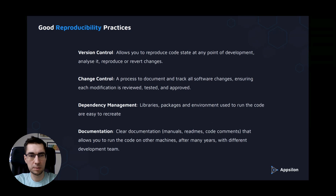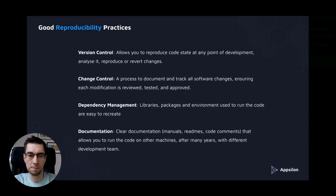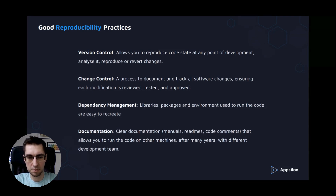What's in good reproducibility practices? It's about version control, which allows you to reproduce code state at any point of development, analyze it, reproduce it, or revert changes. It's about change control — you have a process to document and track all software changes, ensuring each modification is reviewed, tested, and approved. It's also about dependency management, so all the libraries, packages, and environments used to run the code are easy to recreate. And it's about documentation, so you have clear documentation that allows you to run the code on other machines after many years with different development teams.